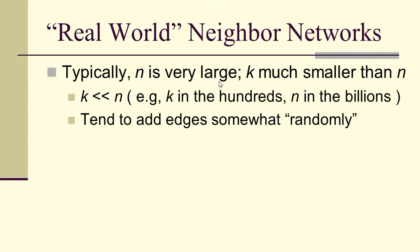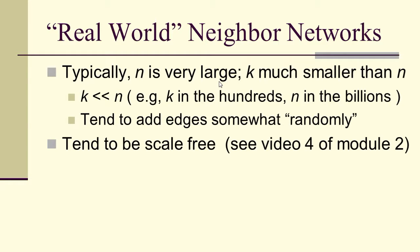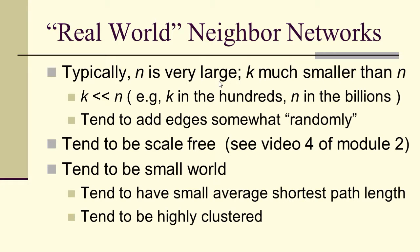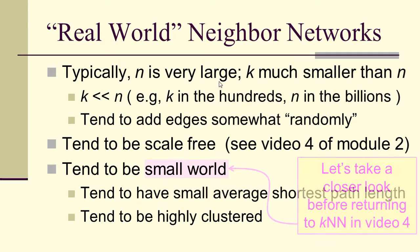Real world networks typically have a very large n. K is much smaller, on the scale of tens or hundreds while n is billions or trillions. They tend to add edges somewhat randomly, tend to be scale-free, and tend to be small world, which means a small average shortest path length and highly clustered. Let's look at this before we look at K-nearest neighbor networks in more detail.